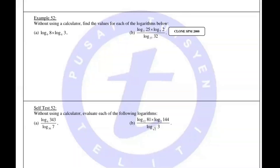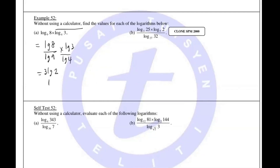For the next one, you need to evaluate these logarithms, but the bases are all different. When the bases are all different, change everything to base 10. Base 10 is easiest because you don't have to write so many things — remember, base 10 is LG, short form. So I put lg8 over lg9, multiplied by lg3 over lg4. Now 8 is 2^3, 9 is 3^2, 4 is 2^2. After cancelling, you get 3 over 4.